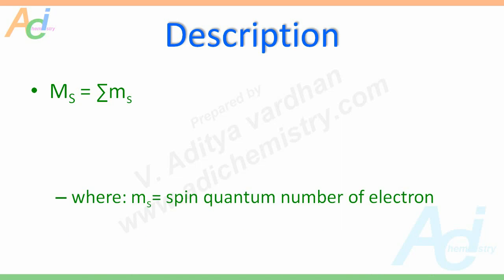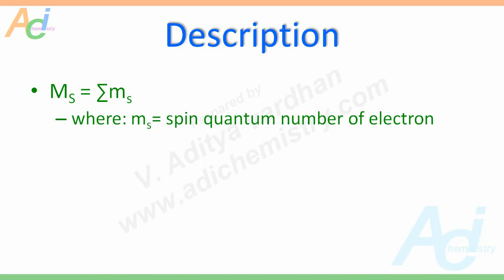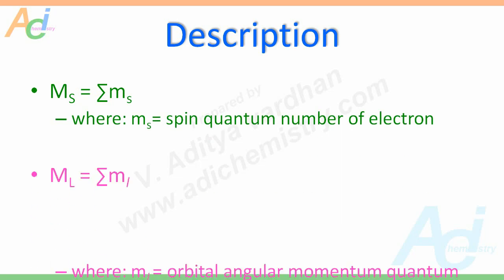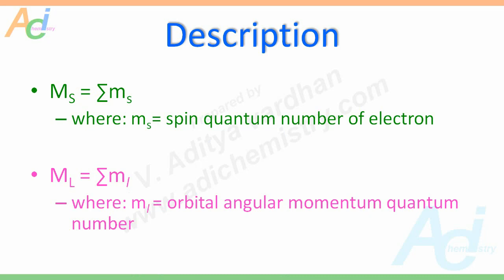Look at the description once again: 2S+1LJ, where S is the maximum possible ms value, L is the maximum possible ml value, and J is either L minus S, L plus S, or just S depending on the electronic configuration of the ground state. Here ms is the sum of the spin quantum numbers of electrons, whereas ml is the sum of the orbital angular momentum quantum numbers.